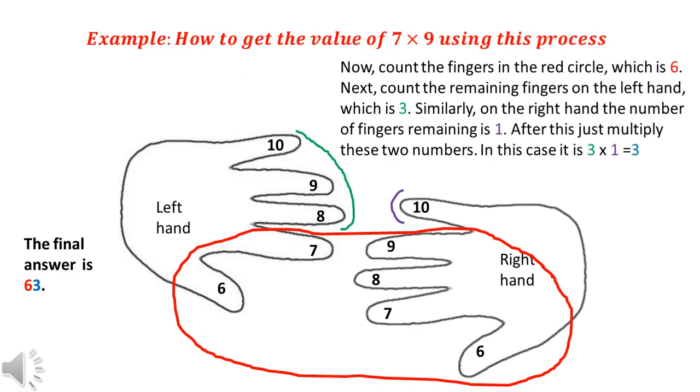Now, count the fingers in the red circle, which is 6 in this case. Next, count the remaining fingers on the left hand, which is 3. Similarly, on the right hand the number of fingers remaining is 1. After this just multiply the remaining fingers of the left and right hand. In this case it is 3 into 1, which is 3.